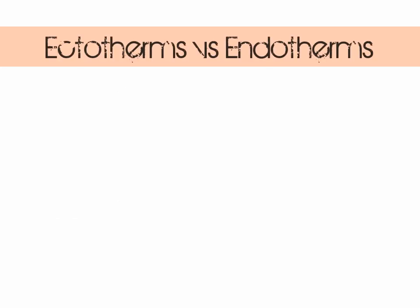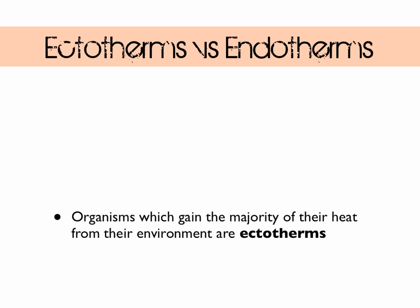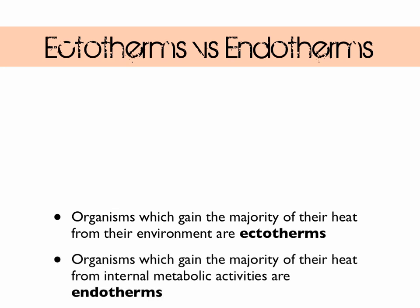Now when we rattled through our objectives I used some terms you probably weren't familiar with. I'm talking about endotherms and ectotherms. Ectotherms are organisms which gain most of their heat from their environment — you might have once referred to these as cold-blooded animals. Endotherms gain their heat from metabolic processes — you might once have called these warm-blooded. So ectotherms are cold-blooded, endotherms are warm-blooded.